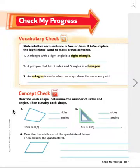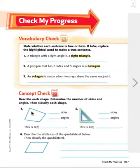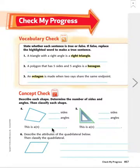Now let's do four through six. It says describe each shape and determine the number of sides and angles, then classify the shape. The sides are the edges and the angles are where two lines meet at the same endpoint. This shape obviously has four sides and four angles, and it is called a quadrilateral — the name for any shape that has four sides and four angles. Q-U-A-D-R-I-L-A-T-E-R-A-L.